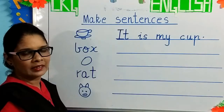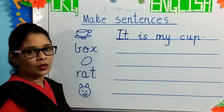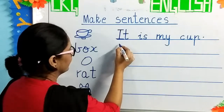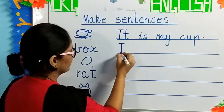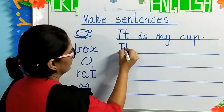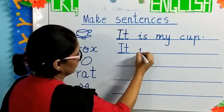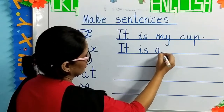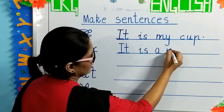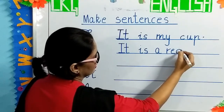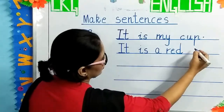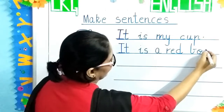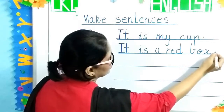The next one is box. It is a box. It is a red box. So again, capital I — it is a red box. B-O-X. And a full stop.